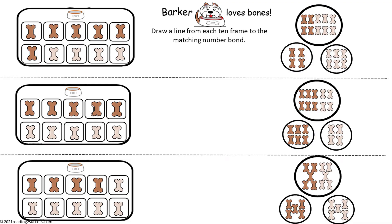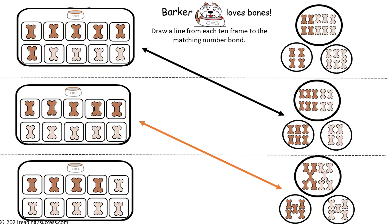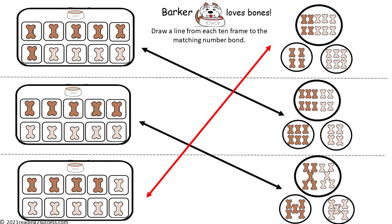Now have kids draw a line from each 10 frame to the matching number bond. Examples include: 6 brown bones plus 4 tan bones equals 10; 5 brown bones plus 5 tan bones equals 10; and 4 brown bones plus 6 tan bones equals 10.